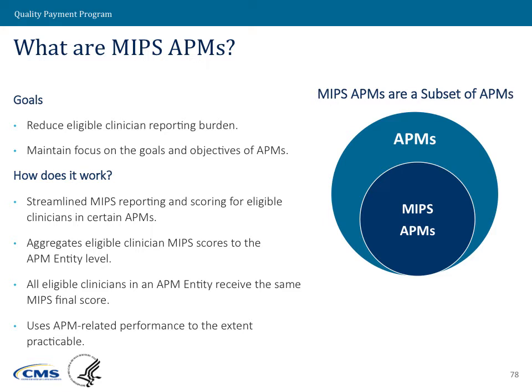The general premise is that all of the eligible clinicians in an APM entity — that accountable care organization, group practice, or hospital, depending on the type of APM — will be assessed collectively, and they will receive the same MIPS score and payment adjustment for that particular year.